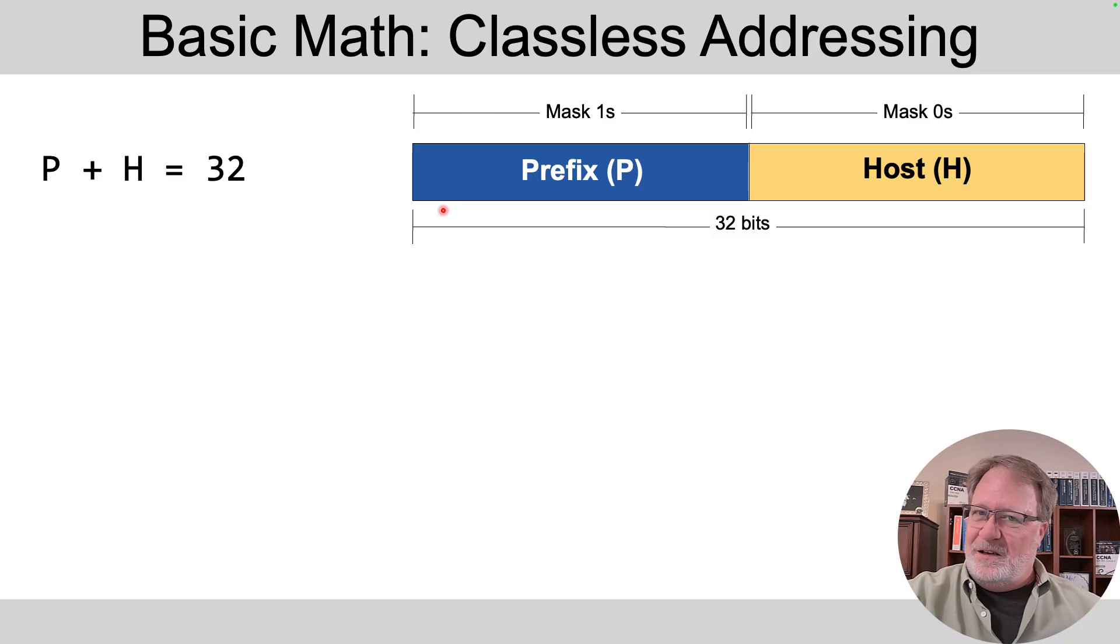And the host part, that changes from address to address to identify different addresses. So that's the idea. And it turns out that with a subnet mask, the prefix part, the mask is all binary ones. And in the host part, the mask is all binary zeros.